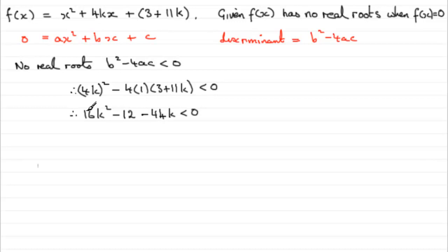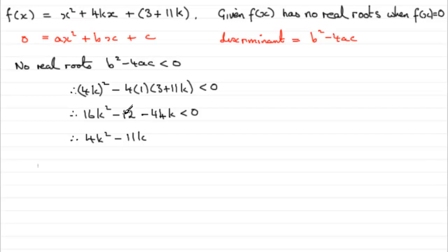I noticed that we could divide through by 4 — each of the four terms is divisible by 4. So if we do that, we're going to have 4k squared, then minus 11k, then minus 3, and dividing zero by 4 is just zero. Because we divided by a positive number, the inequality doesn't have to be reversed.